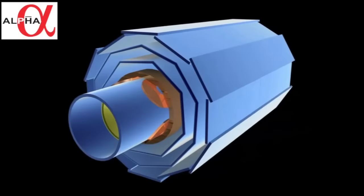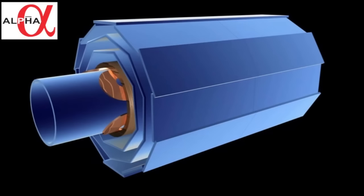The alpha antihydrogen experiment at CERN. When we zoom in on the alpha experiment, we see the central bit of the apparatus here, with on the outside the three-layer annihilation detector.